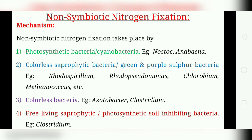In the mechanism of non-symbiotic nitrogen fixation, photosynthetic bacteria or cyanobacteria — example Nostoc and Anabaena — reduce nitrogen using electrons from water. For colorless saprophytic bacteria, green and purple sulfur bacteria, or non-sulfur photosynthetic bacteria like Rhodospirillum and Rhodopseudomonas, Chlorobium, and Methanococcus, nitrogen is reduced by electrons from sulfur, hydrogen sulfide, or organic compounds.